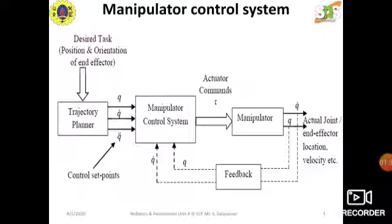The trajectory planner provides position, velocity, and acceleration as control set points. Together, all three — position, velocity, and acceleration — are called Control Set Points. These are developed based on the position and orientation of the end effector and are provided to the Manipulator Control System, which provides the actuator command. This command is fed as input to the manipulator, causing the end effector to move to the desired task.